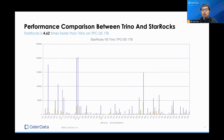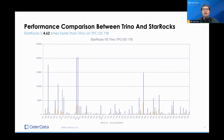Let's first see a performance comparison. StarRocks is 4.62 times faster than Trino on a TPCDS 1TB benchmark test. TPCDS covers high cardinality aggregations and a lot of joins — really OLAP-style complex ad hoc scenarios. StarRocks is 4.5 times faster than Trino on this, even with Trino on the new JDK 21 getting that performance boost from the JDK upgrade.